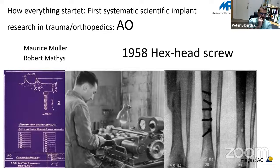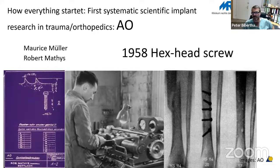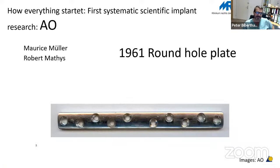The systematic scientific approach was developed by the AO through a symbiosis of two guys — Maurice Muller and Robert Mattis. Mattis was a craftsman who created the implants, and you can see drawings of the very first cancellous bone screws he developed. The round hole plate of 1961 was one of the first implants, and with these plates they started a fantastic history of success.